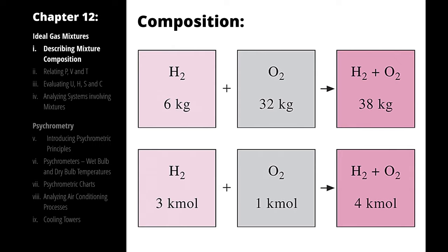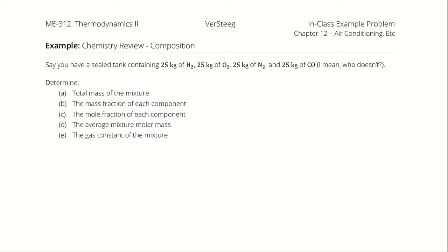To get some practice describing proportions in both a mass and molar basis, let's try an example. Say you have a sealed tank containing 25 kilograms each of hydrogen, oxygen, nitrogen, and carbon monoxide. We want to find the total mass of the mixture, the mass and molar fractions of all the components, the average mixture molar mass, and the gas constant of the mixture itself.